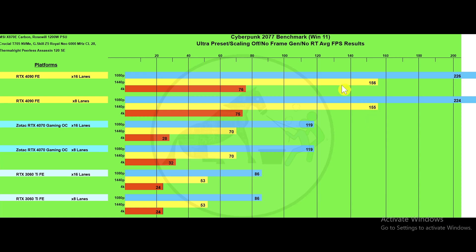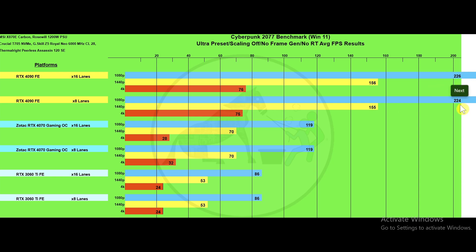The first benchmark is Cyberpunk 2077's built-in benchmark tool — ultra preset, scaling off, no frame gen, no RT. For all charts, I show 16 lanes versus 8 lanes for each GPU. At 1080p, the 4090 is at 226 frames on 16 lanes and 224 on 8 lanes. At 1440p, 156 vs. 155 frames. At 4K, 76 vs. 75 frames.